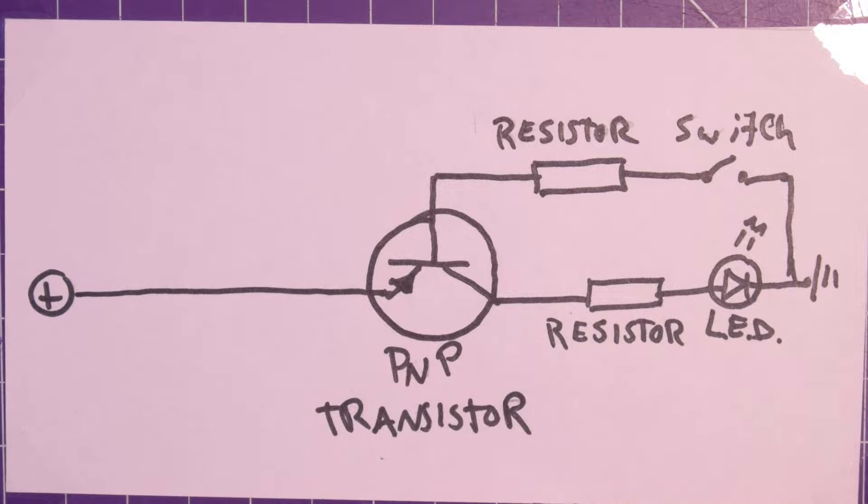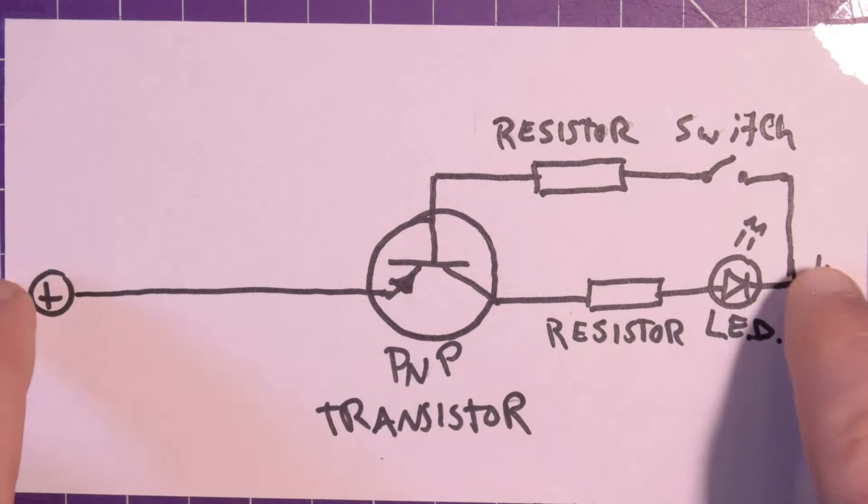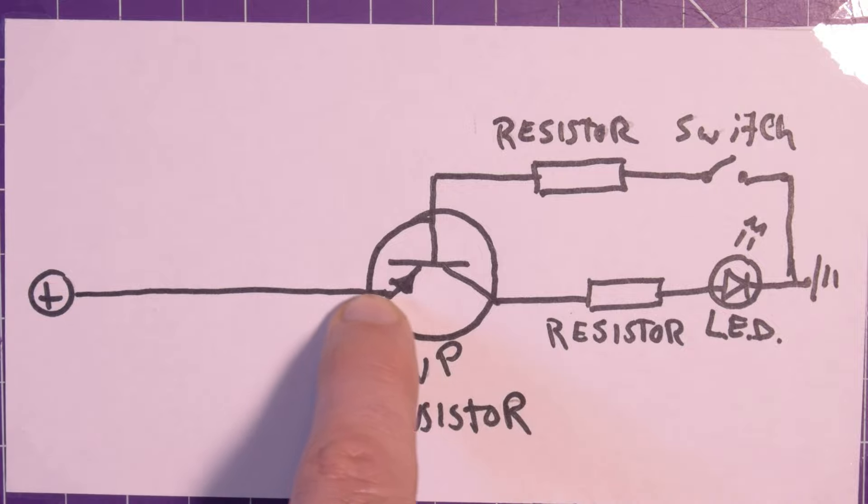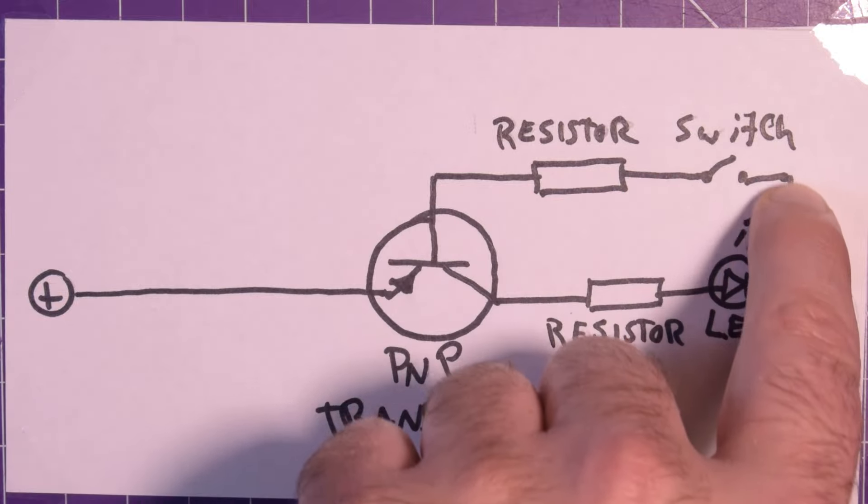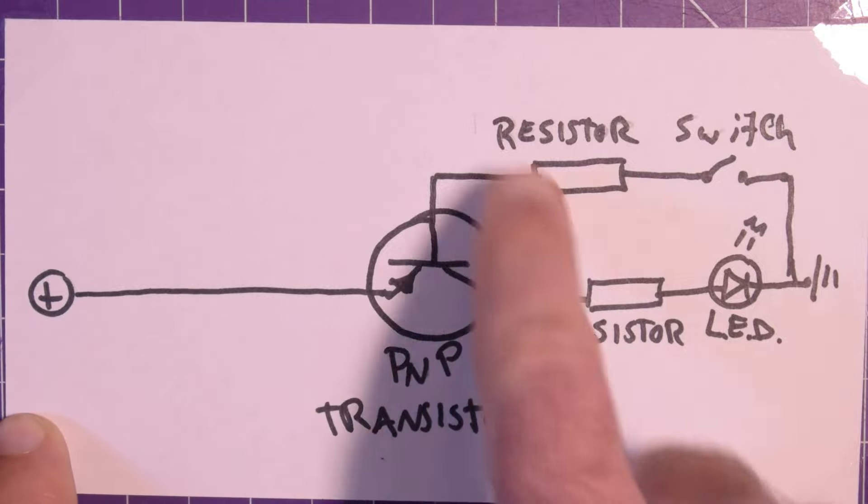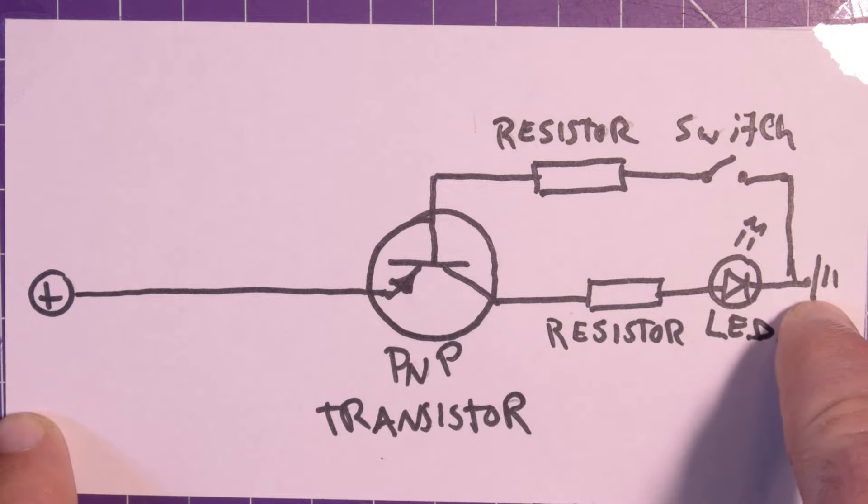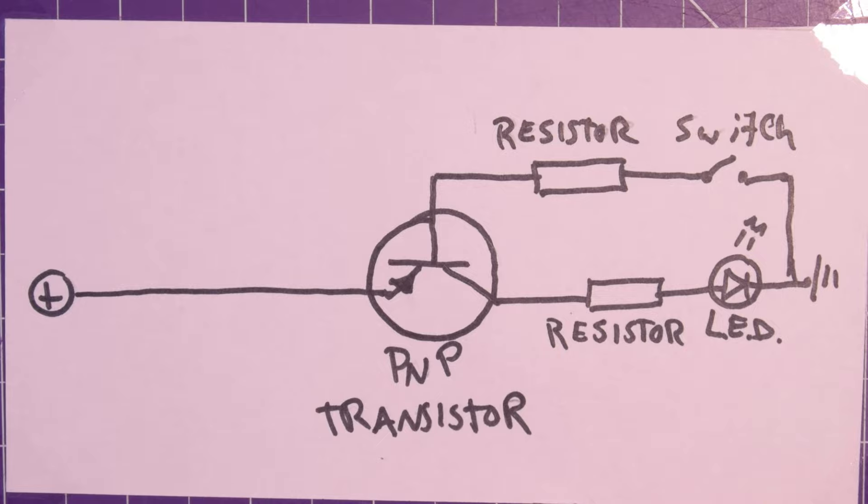But everything else remains the same. When we flip this switch the base here will be pulled down to ground, so current will be able to flow from the 5 volts through the base, through the switch to ground, which will allow current to flow from the 5 volts through the switching portion of the PNP transistor, through a resistor, through our LED, and to ground. So this all works in principle, but does it work in practice?